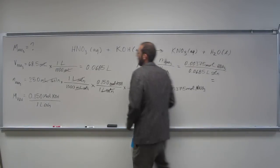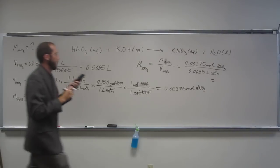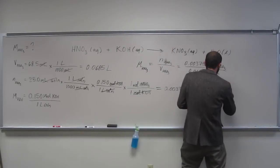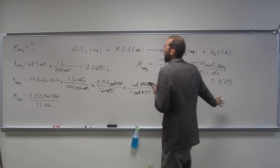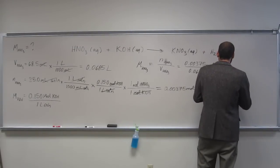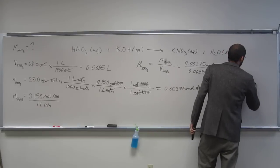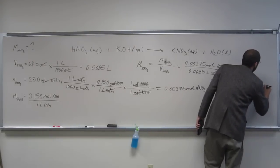And that's going to equal 0.05... and how many sig figs are we going to have? So 3, I think, so 0.0547 molar HNO3.